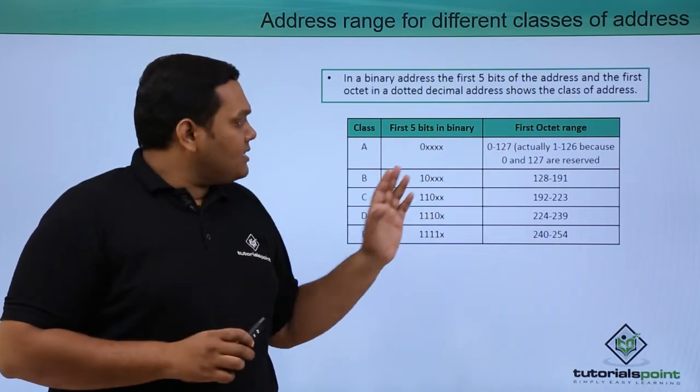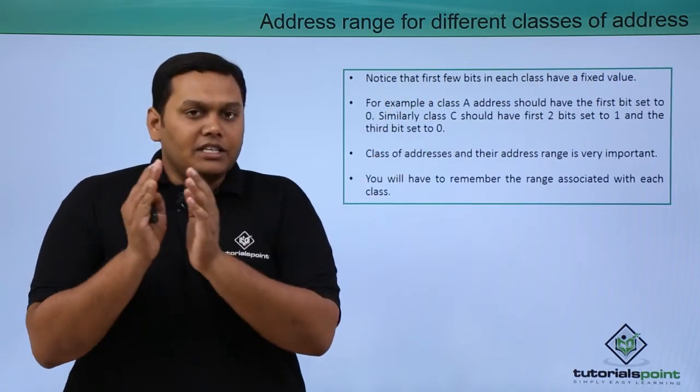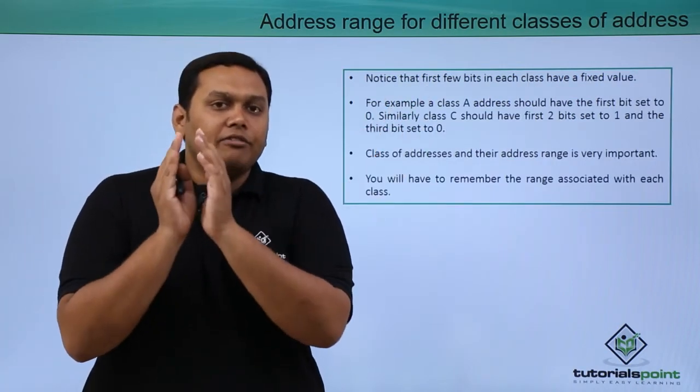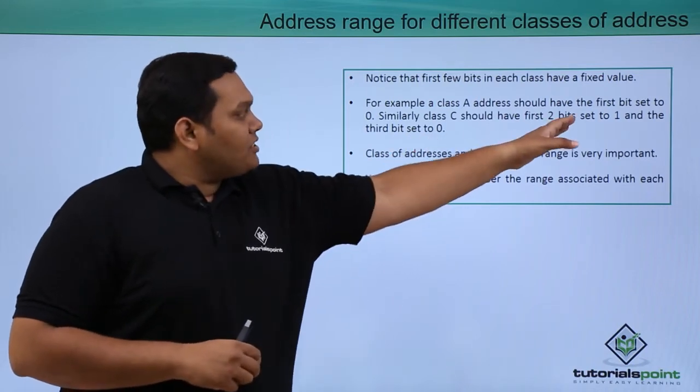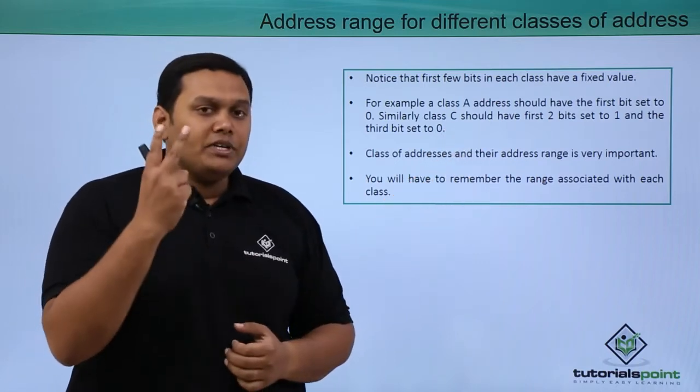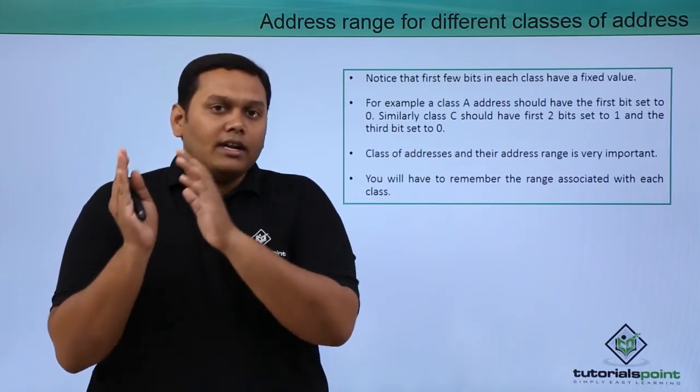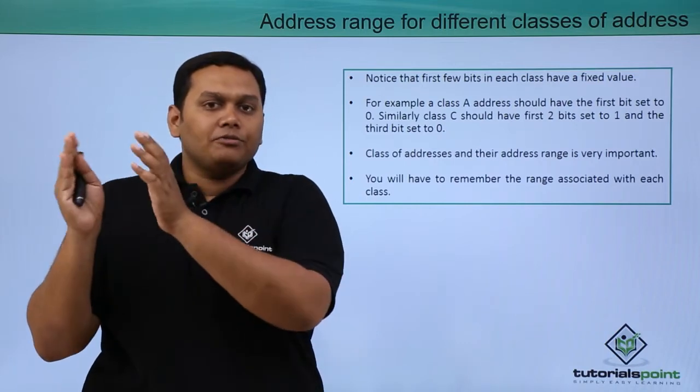We will be discussing this more clearly. You can see the first few bits in each class have a fixed value. For example, class A should have the first bit set to 0, and class C should have the first 2 bits set to 1 and the third bit set to 0. This is already a fixed value given to the first bits in the octet.